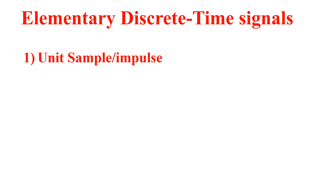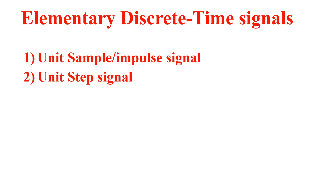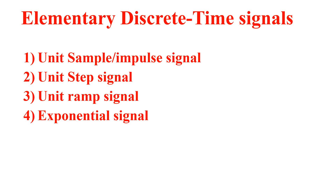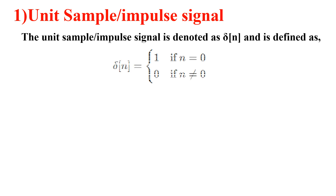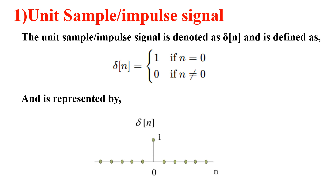Now, elementary discrete time signals. The first is the unit sample or impulse signal. The unit sample or impulse signal is denoted as δ(n) and is defined as: δ(n) = 1 for n = 0, and δ(n) = 0 for n ≠ 0. Its graphical representation is shown here.